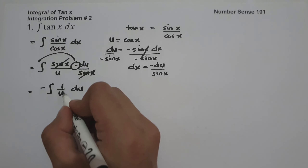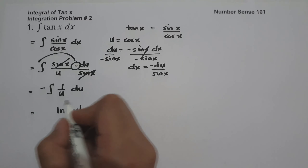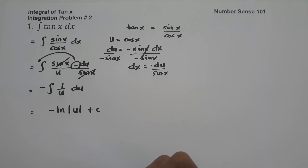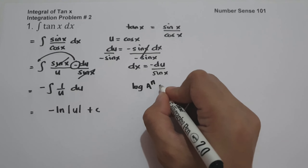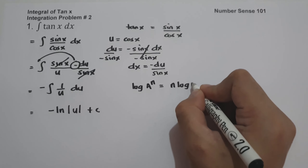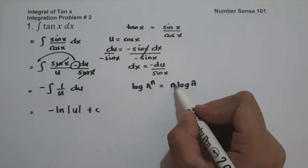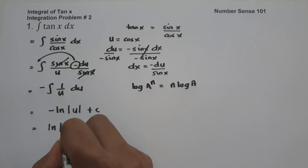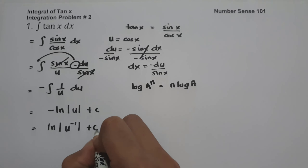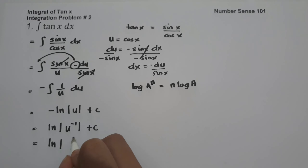The antiderivative of 1 over u is ln absolute value of u plus C. And since we have a negative sign, let us use one of the properties of logarithm — that log a raised to n is equal to n log a — so we can move the negative as an exponent. This will be ln absolute value of u raised to negative 1 plus C, which simplifies to ln absolute value of 1 over u plus C.